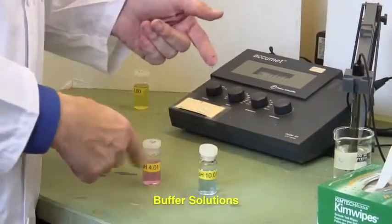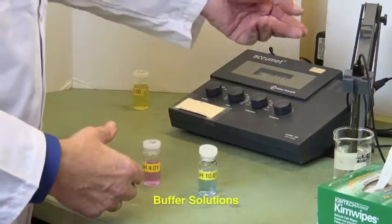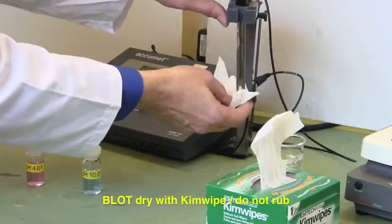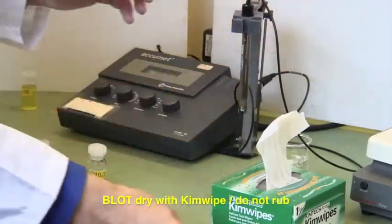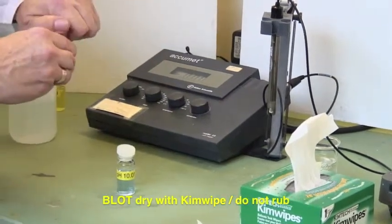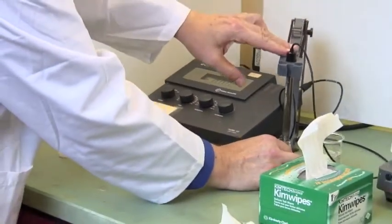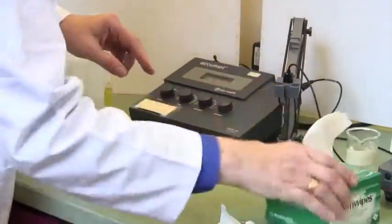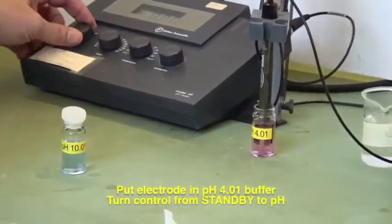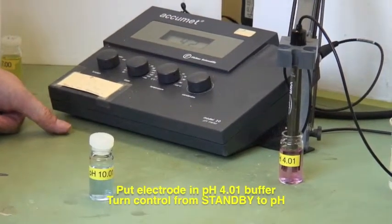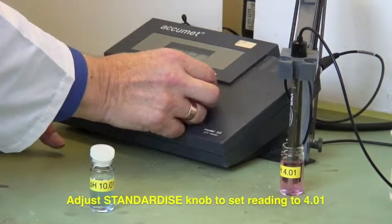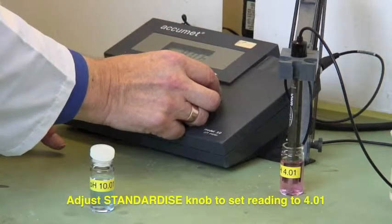Calibrate using buffer solutions in labeled, color-coded vials next to the pH meter. Lift the electrode and blot it dry with a chem wipe—don't rub, as this creates static charge and poor results. Lower the electrode into the pH 4 buffer, which is pink. Turn to pH mode and use the standardize knob to adjust the reading to 4.01.